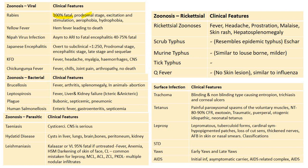Rabies is almost 100% fatal — only three cases in history have recovered. Prodromal stage will be present; excitation and stimulation follow; aerophobia and hydrophobia will be present. Yellow fever presents as hemorrhagic fever leading to death. Nipah fever: asymptomatic cases occur; it causes acute respiratory infection to fatal encephalitis, with 40 to 50% of cases fatal. Japanese encephalitis: subclinical-to-case ratio is about 1:250.